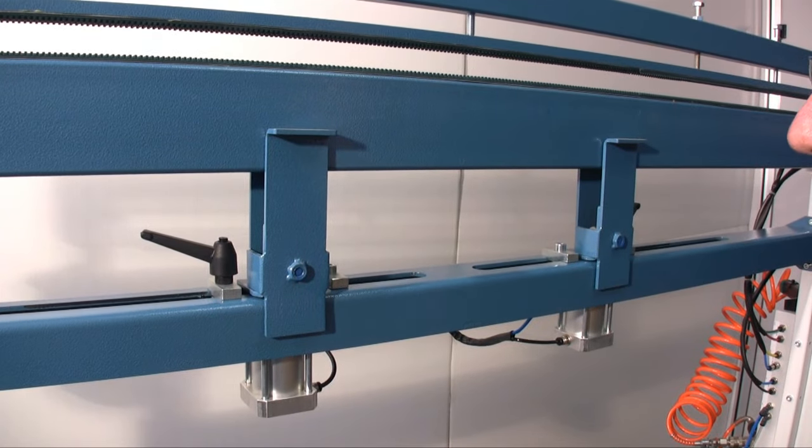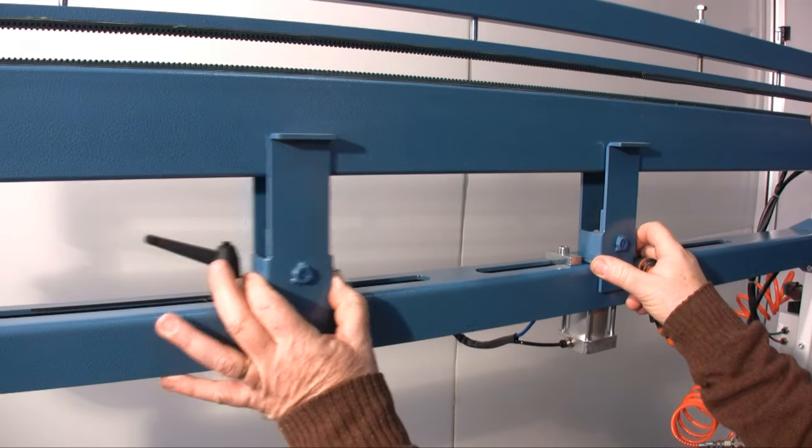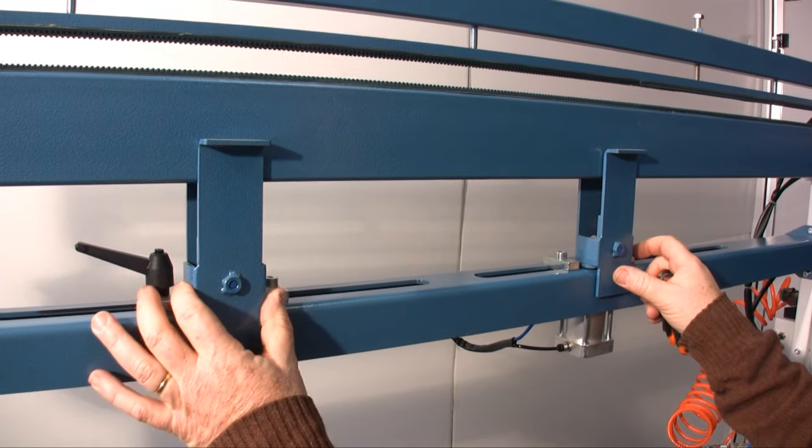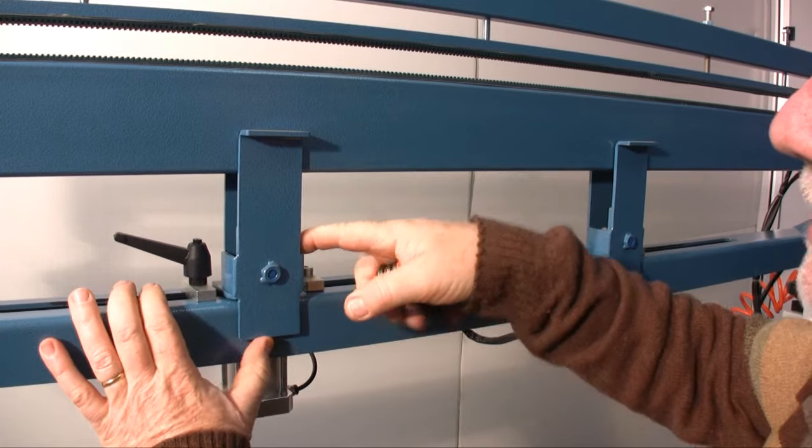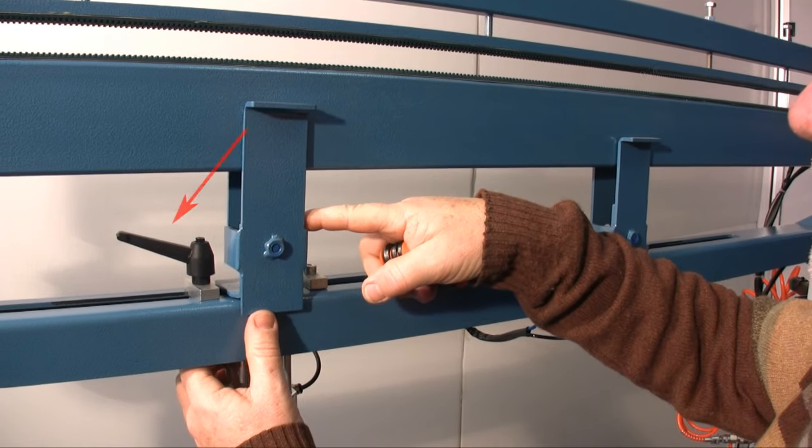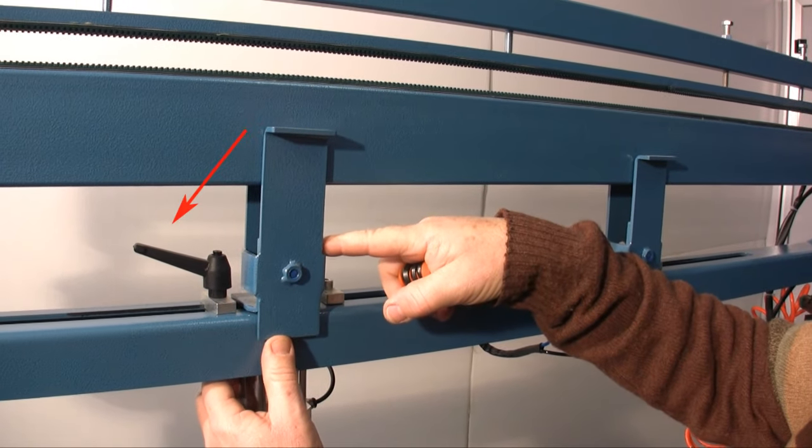The two shelves which have to support the frame can be moved sideways to adapt to the dimension of the stretcher frame. Their position can be fixed by a knob. They can also be moved vertically.